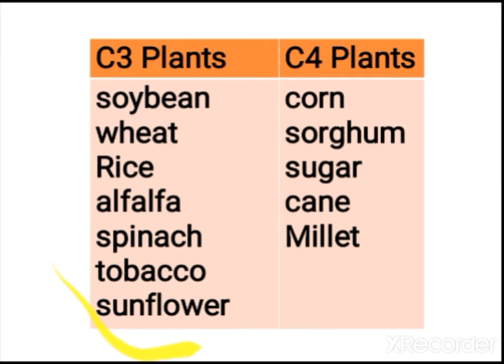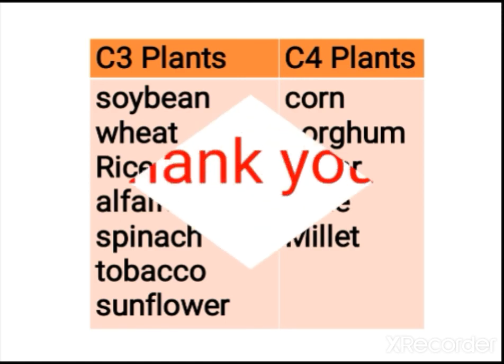Examples of C3 plants include wheat, rice, spinach, and tobacco. C4 plants include corn, sugarcane, and millet. Children, these examples are sometimes asked in exams. The C4 pathway diagram and the differences between C3 and C4 can also be asked in different formats, so study thoroughly. We will meet in the next class — thank you.